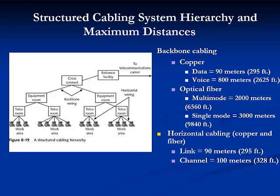For voice in the backbone using copper cable, it's 800 meters. When you use optical fiber in the backbone — the multimode type, which I'll be talking about in Module 9 — multimode optical fiber has a limit of 2,000 meters or 6,560 feet, where single mode has a limitation of 3,000 meters. With regard to the horizontal cabling, the link — whether copper or fiber — is a maximum of 90 meters or 295 feet, and the channel is 100 meters or 328 feet. Whether you're using optical fiber or copper in the horizontal cabling, the link and channel maximum distances are exactly the same.